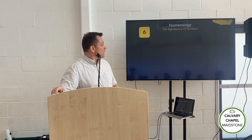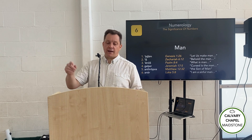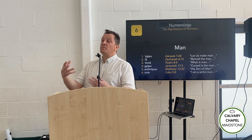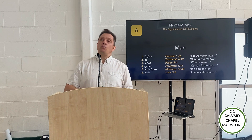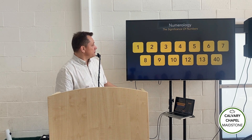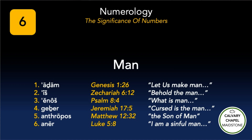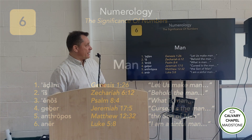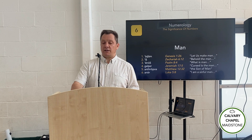Number six is the number of man. Man was created on which day? The sixth day. The sixth commandment is the prohibition of murder — man is created on the sixth day, man is killed on the sixth. There are six different words for man in the Bible: four are in the Old Testament and two are in the New Testament; four are Hebrew and two are Greek — including Adam and Ish. Six is the number of man. And there were six cities of refuge that man could run to for safety in Numbers 35.